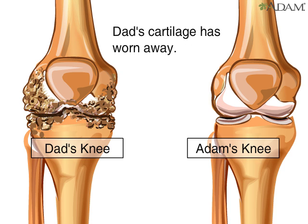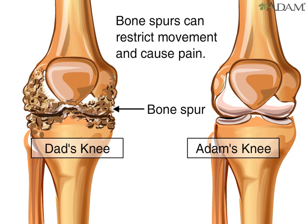The cartilage of the affected joint is roughened and becomes worn down. As the disease progresses, the cartilage becomes completely worn down and the bone rubs on bone. Bony spurs usually develop around the margins of the joint, and part of the pain results from these bone spurs, which can restrict the joint's movement as well.